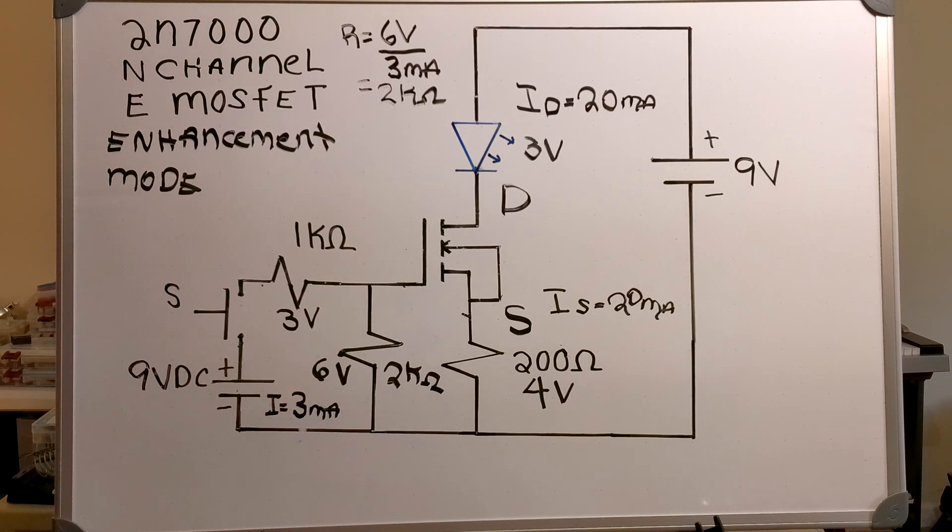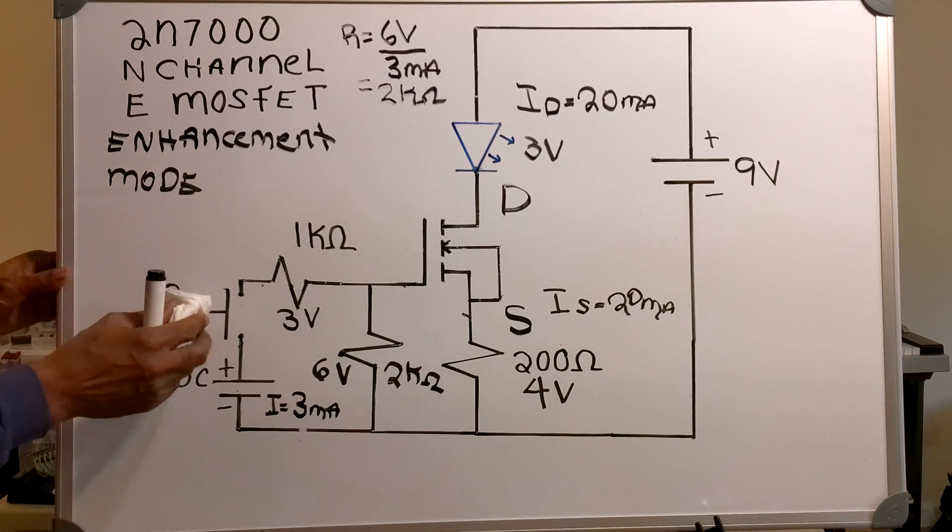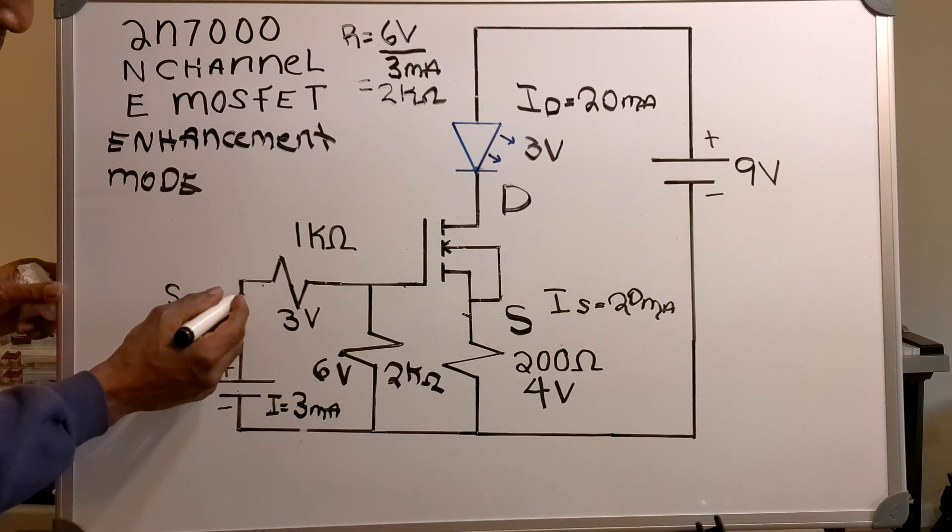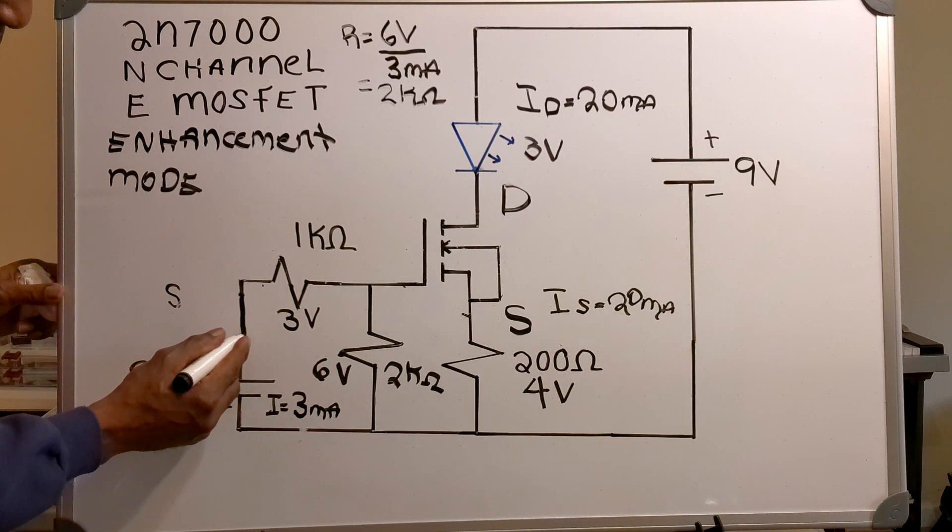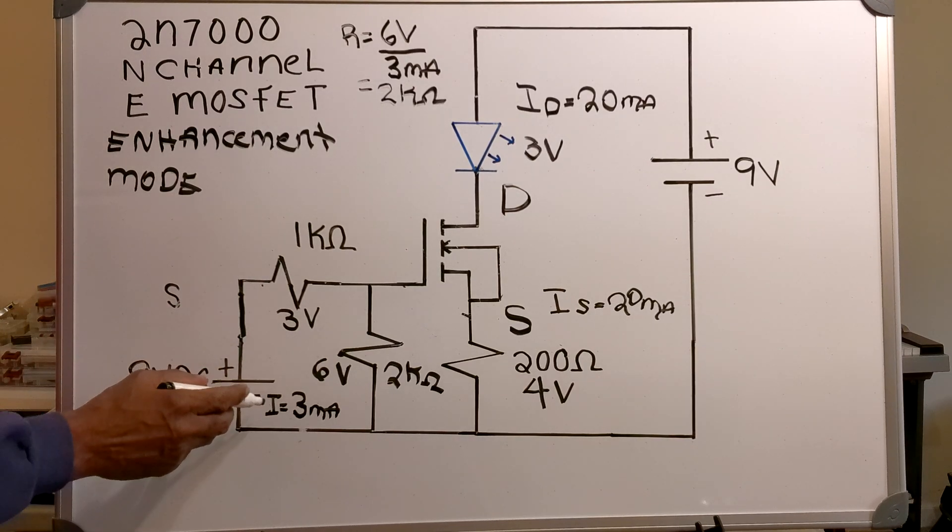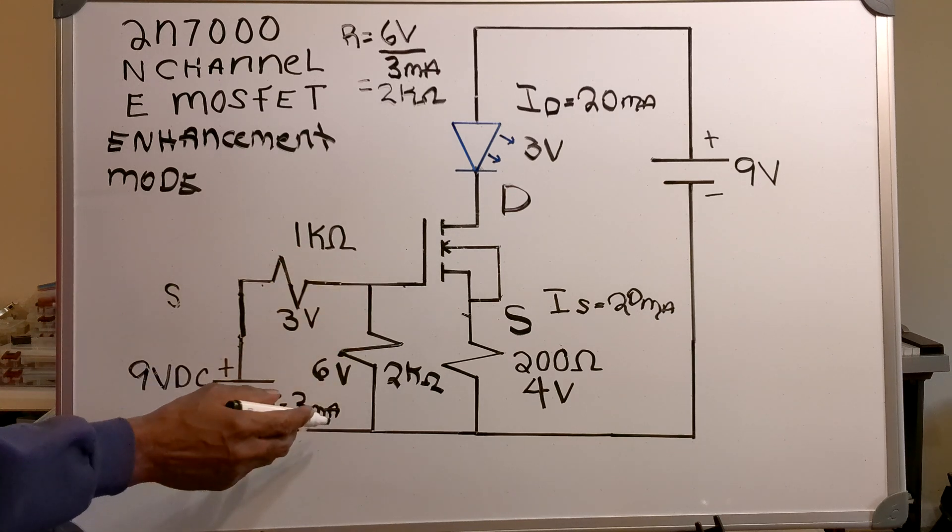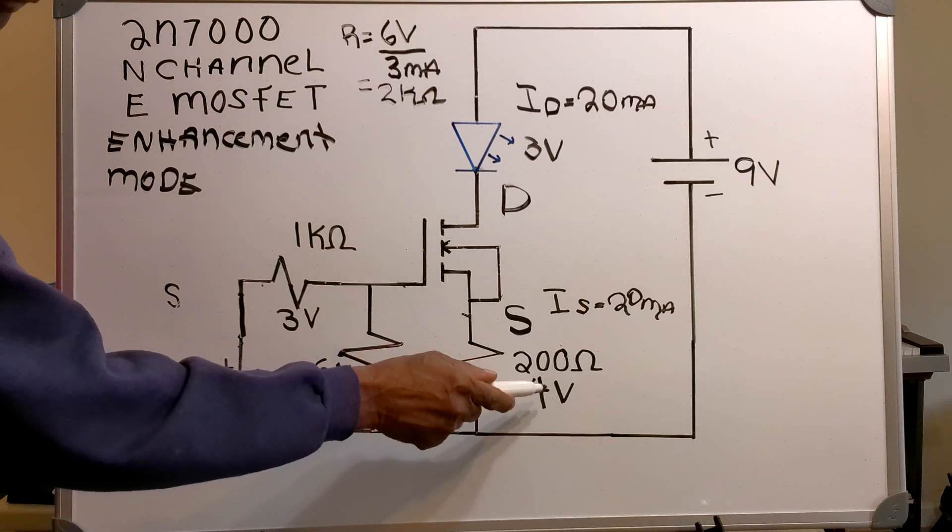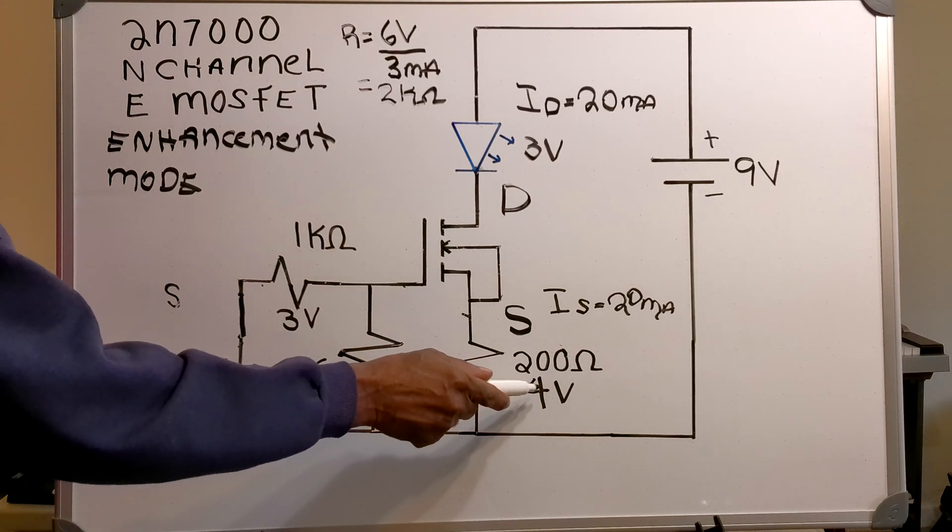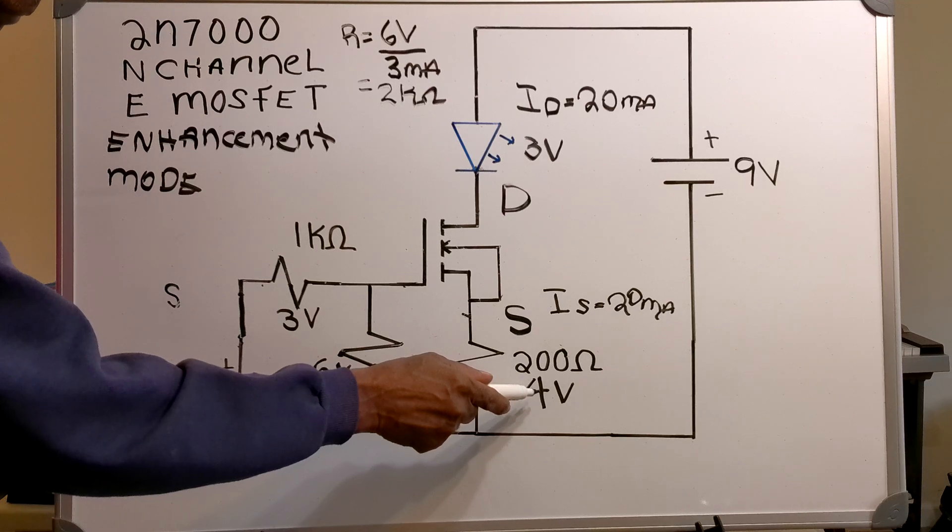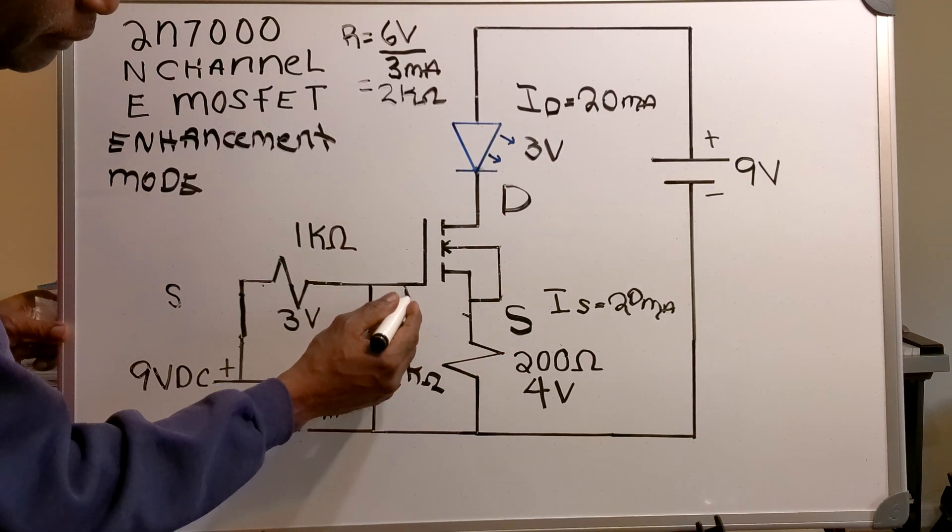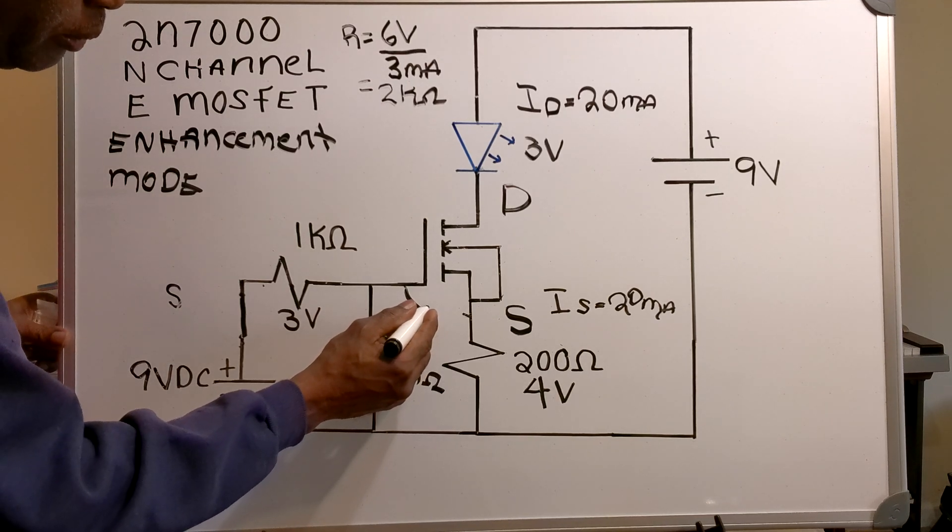Now, I'll close my switch. Now, my 3 milliamps of current is now flowing through the circuit and I'm getting my 6 volts. Now, I'm going to have 3 volts here. I'm going to have 4 volts here. And my VGS will be 2 volts.